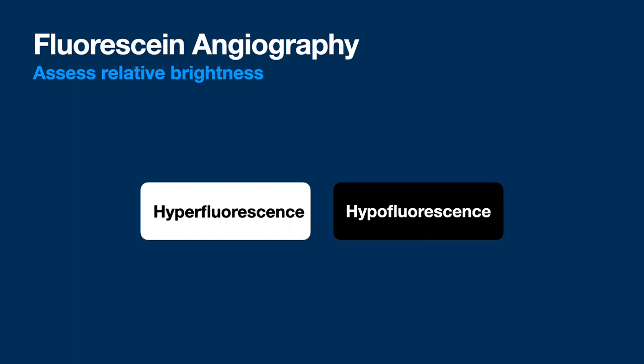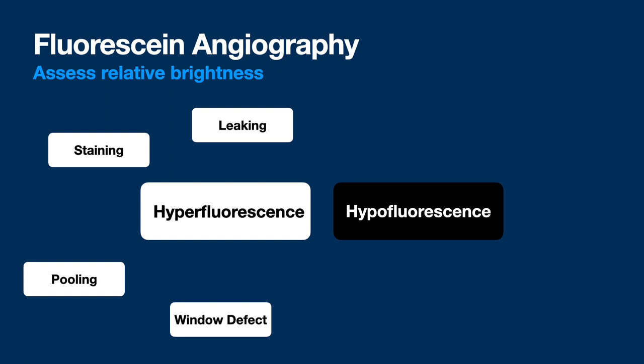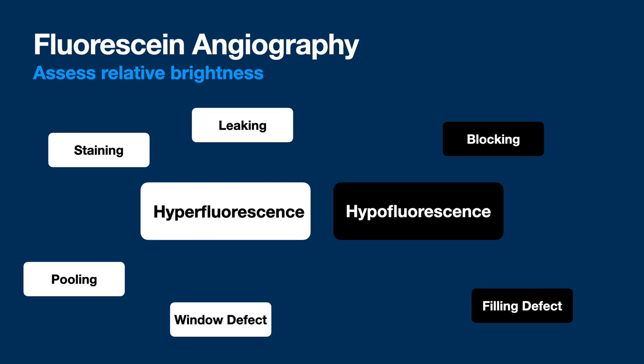The more important way we break down fluorescein findings is too bright or too dark — hyperfluorescent and hypofluorescent. There's also the newer term 'cyanescent' for ICGA. Hyperfluorescence breaks into categories: leaking, window defect (transmission defect), staining, and pooling. Staining and pooling can be hard to distinguish — different observers may call the same image differently on different days, and it generally doesn't change management. Hypofluorescence is either blocking — something bright below is being obscured — or a filling defect, meaning actual lack of blood flow.